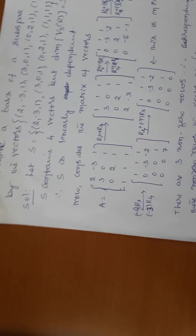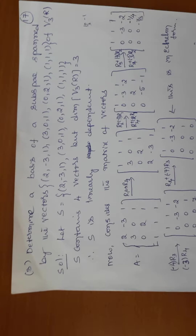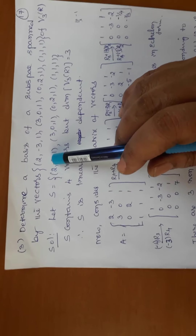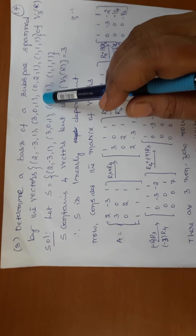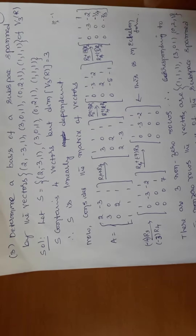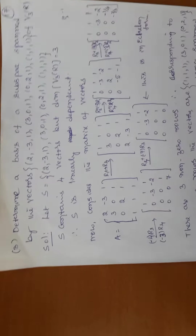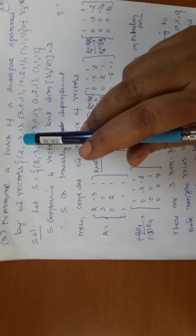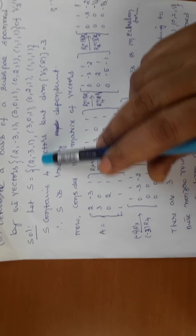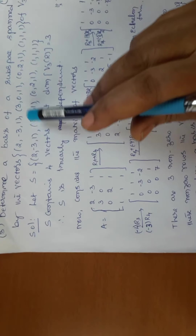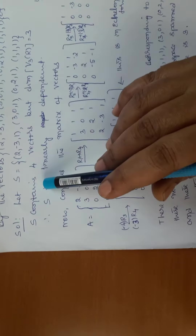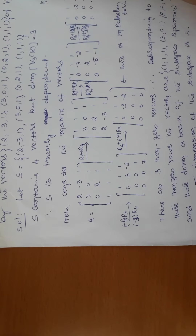The next problem: determine a basis of the subspace spanned by the vectors (2,-3,1), (3,0,1), (0,2,1), (1,1,1). There are four vectors in V3(R). This type of problem is commonly asked in examinations. Let S denote the given set of vectors. Observe each vector has dimension 3 since it is a subset of V3(R). We want to find a basis of the subspace spanned by these four vectors.